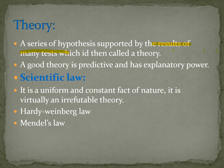A scientific law is a uniform and constant fact of nature. It is virtually an irrefutable theory. In biology, laws are very few because nature is complex. Examples include the law of segregation. That is all about the biological method. If you have any questions, you can ask in the comment section. Thank you.